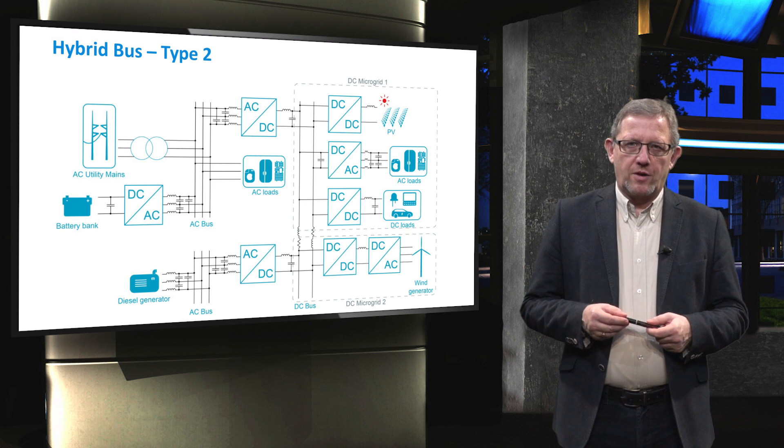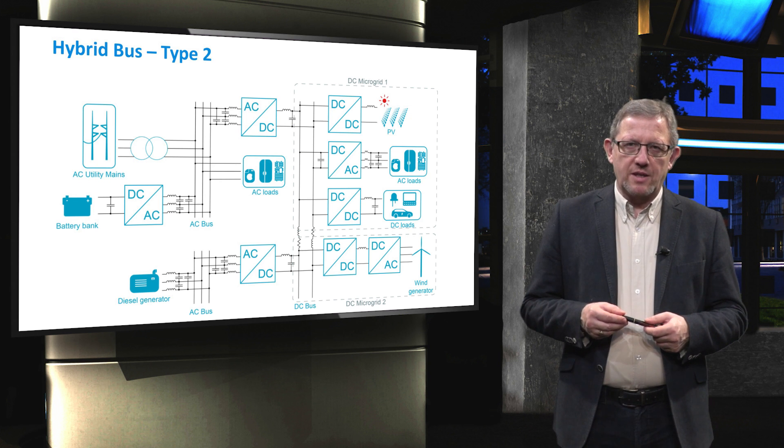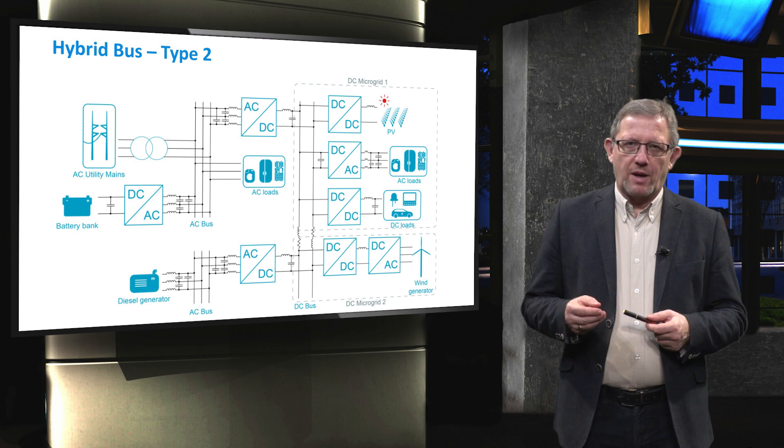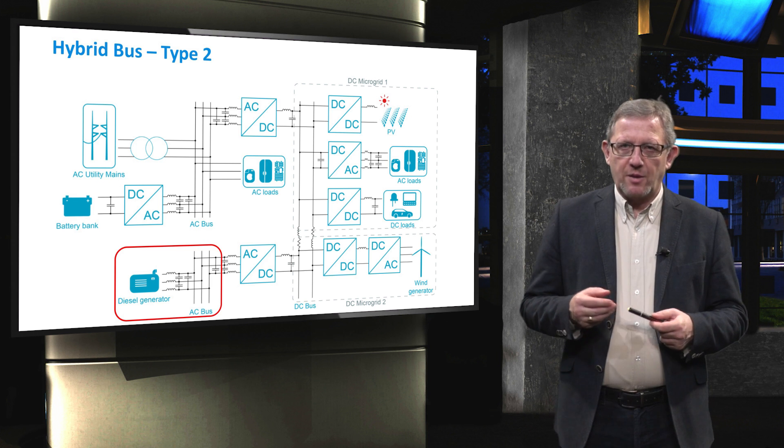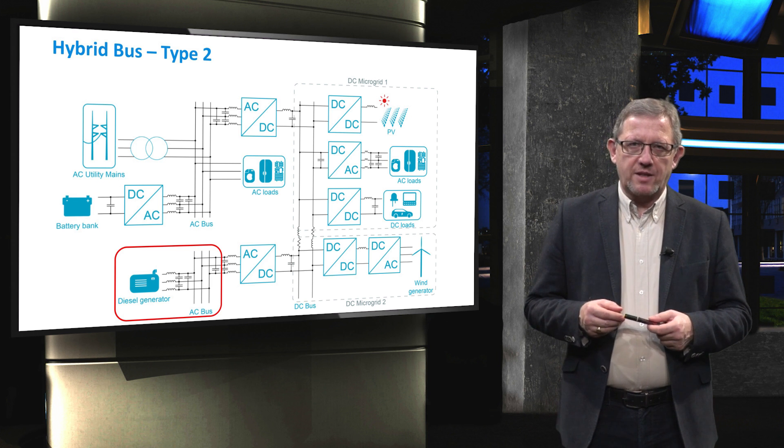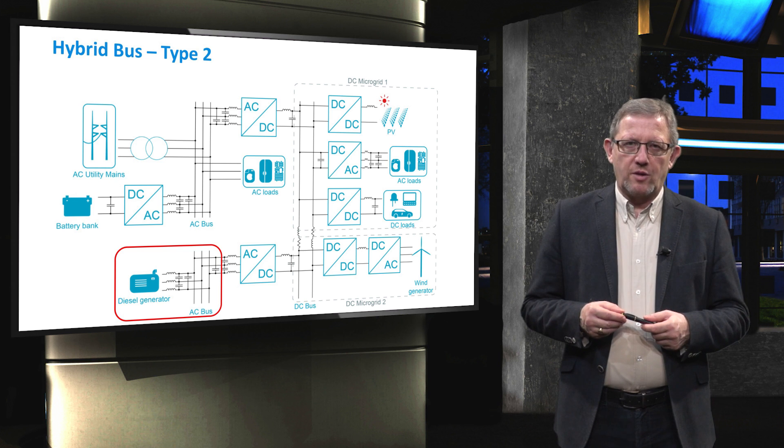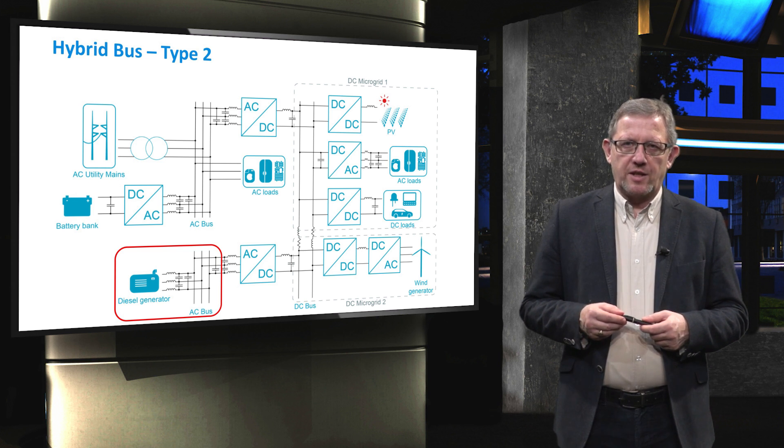To further increase the reliability, it is possible to create two AC buses where the diesel engine is seen as a backup for the DC bus. Thus, in the case of faults at AC utility mains or AC bus, still the DC bus can remain operational thanks to diesel through another AC bus.